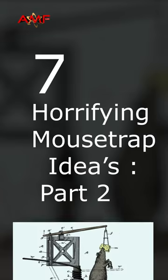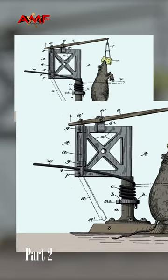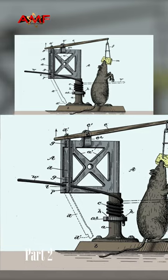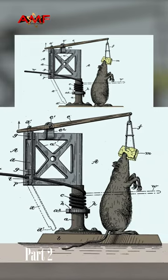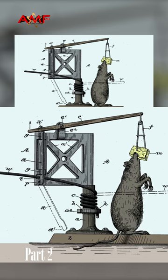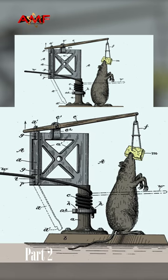7 Horrifying Mousetrap Ideas, Part 2. This trap will whack a mouse across the room like a wiffle ball. The rat would be flung to the other side of the room. How? When the rat nibbles a hanging piece of cheese, it triggers a swinging lever, whacking the creature across the room and hopefully killing it.